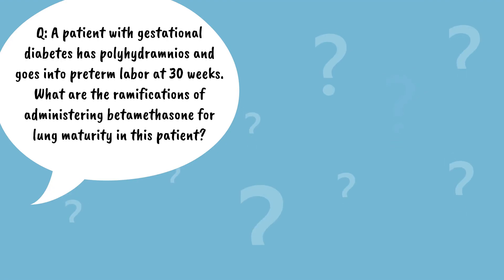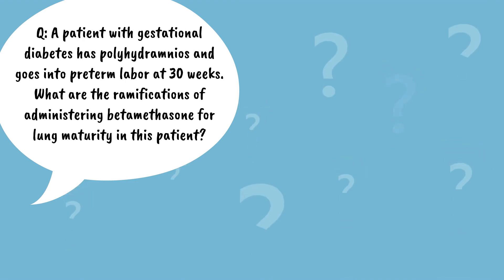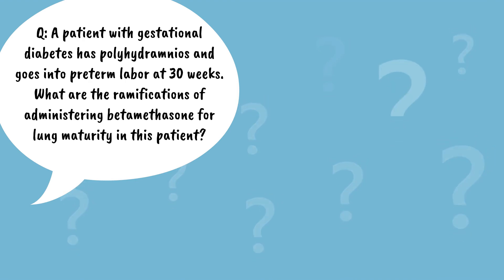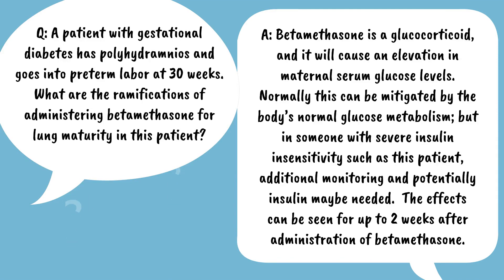A patient with gestational diabetes has polyhydramnios and goes into preterm labor at 30 weeks. What are the ramifications of administering betamethasone for lung maturity in this patient? Betamethasone is a glucocorticoid and it will cause an elevation in maternal serum glucose levels. Normally this can be mitigated by normal glucose metabolism, but in someone with severe insulin insensitivity, additional monitoring and potentially insulin may be needed. The effects can be seen for up to two weeks after administration of betamethasone.